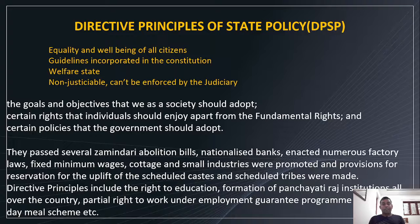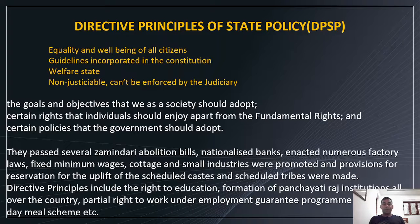Several things have been done taking into account the DPSP: passing zamindari abolition bills, nationalizing banks, enacting factory laws, fixing minimum wages, promoting cottage and small industries, providing reservation for scheduled castes and scheduled tribes, the right to education, formation of Panchayati Raj institutions, employment guarantee programs, and the mid-day meal program.